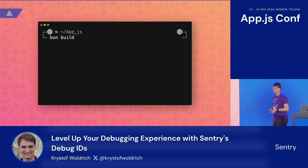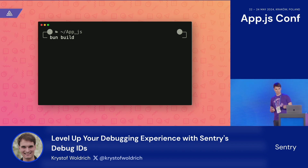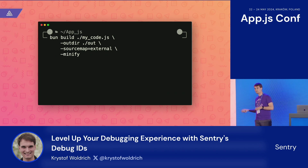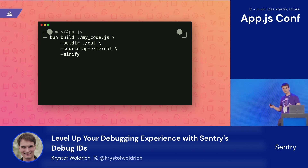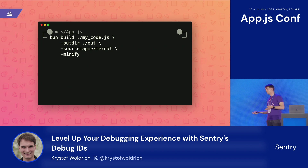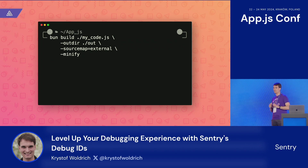I've been playing with Bun lately, so let's try that first. Using the Bun build command, I set up some options, point it to my source code, define the output directory, enable external source maps, and add minification. That's everything I need to do — Bun already generates the debug IDs and includes them in both the bundle file and the source map.